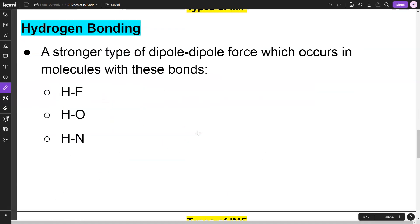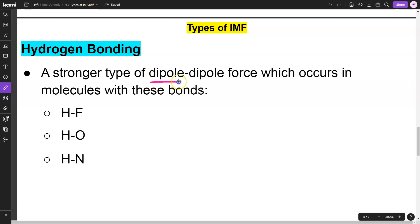Hydrogen bonding is a special type of dipole-dipole force which occurs in molecules that contain H-F, H-O, and H-N bonds. An easy way to remember these bonds is that they spell out FON: F-O-N. So H-F, H-O, H-N.